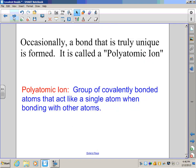Let's move on to polyatomic ions. Occasionally, we have a really unique thing form called a polyatomic ion. Essentially what it is, it's a covalently bonded molecule that acts like a single atom when it's around other atoms. That seems like a pretty long and poetic sort of definition, but that's exactly what it is.